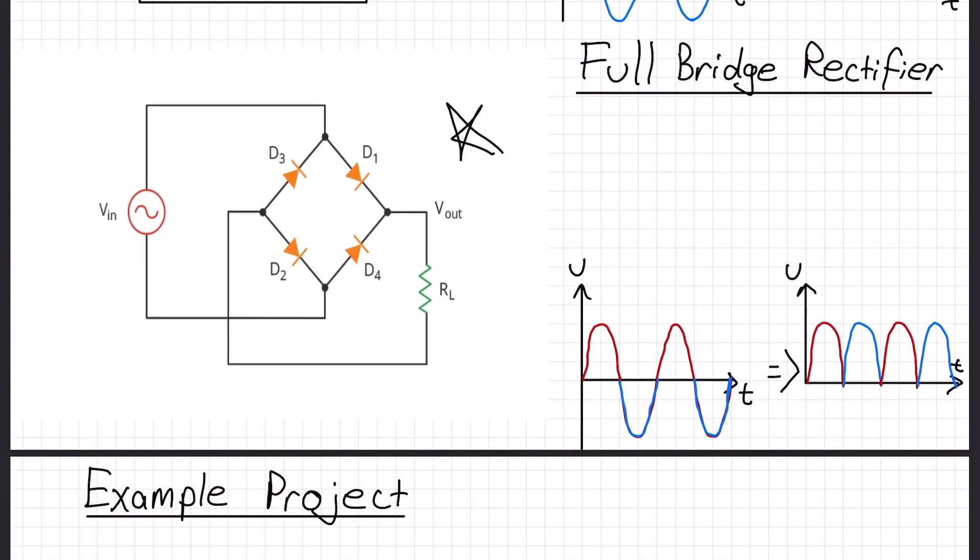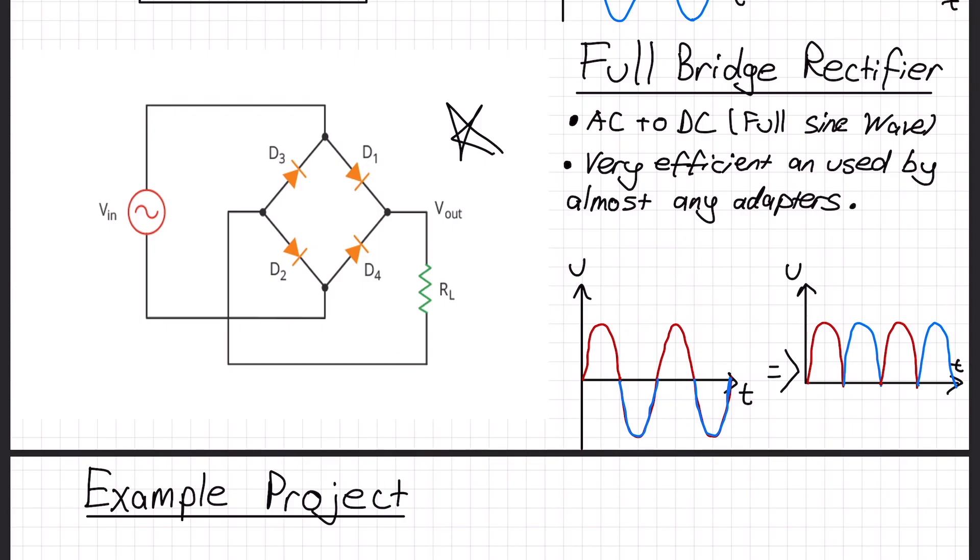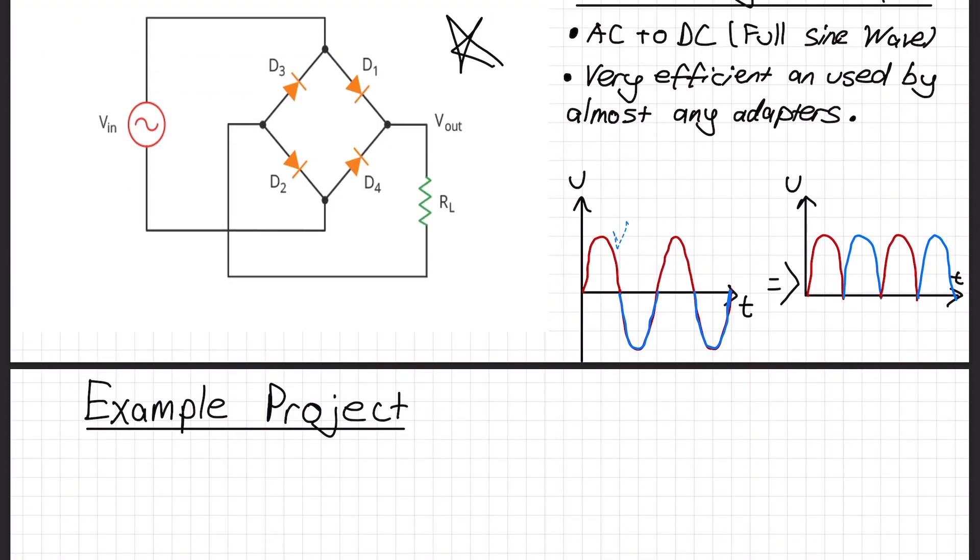So what we have is a full bridge rectifier. I am not going to go in detail about the circuit, but it converts AC to DC as a full sine wave. It's very efficient and it's really commonly used in almost any adapters. If you have a mobile phone charger, if you open it, you will see a full bridge rectifier. As you can see, red waves are positive sine waves and blue waves are negative sine waves. It converts both of them to DC.